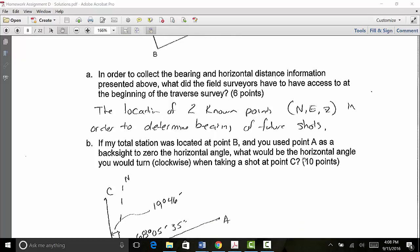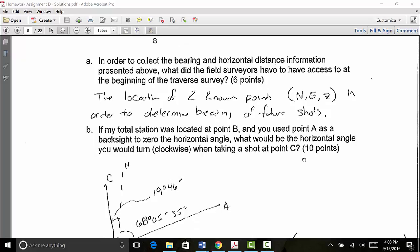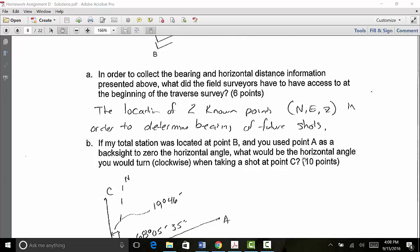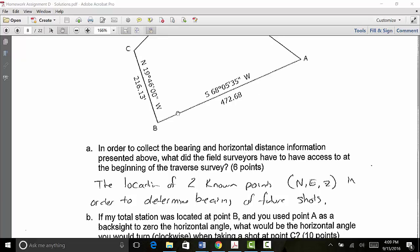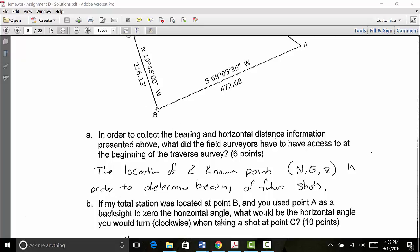Okay, so next question. If my total station was located at point B, and you used point A as a back sight to zero the horizontal angle, what would be the horizontal angle you would turn clockwise when taking a shot at point C? So in other words, here's what we're talking about. My station is located right here at B. I back sight to A, and then once I get that sight, I push zero the horizontal angle on my total station. Now what I'm going to do is turn my total station from this orientation all the way to here, where I have someone standing here at C now with a prism. So another way to think about this is when I first started at B, the other person in my survey party was sitting here at A with a prism. I aligned it with a prism, zeroed my angle. Now I tell this person, hey, walk over to C, stand here. When he or she does that, now I turn my station from pointing this way to pointing that way. Okay, so that's what happened, and I want to know what is this angle that got turned to get from B to C.